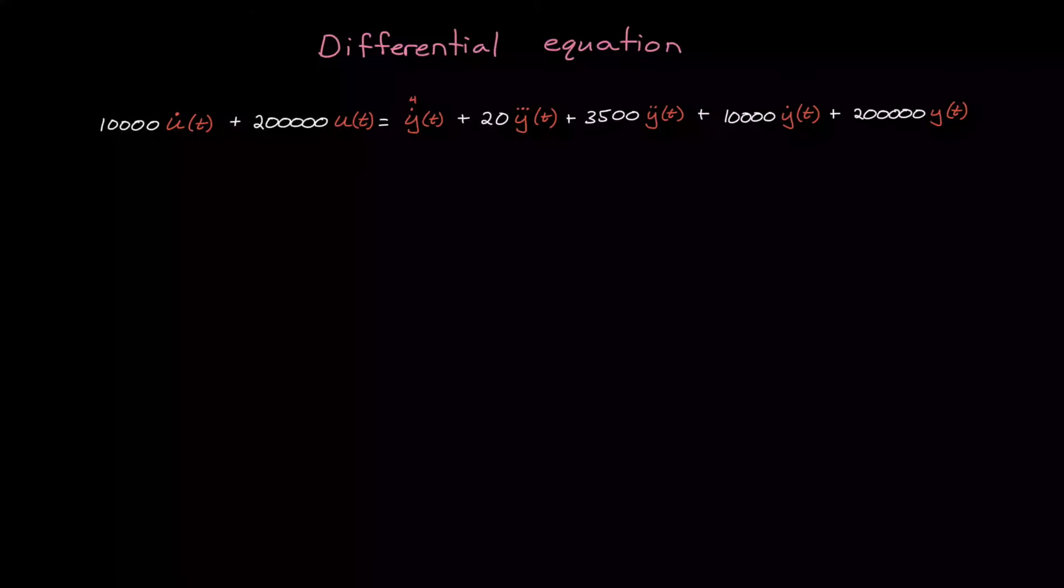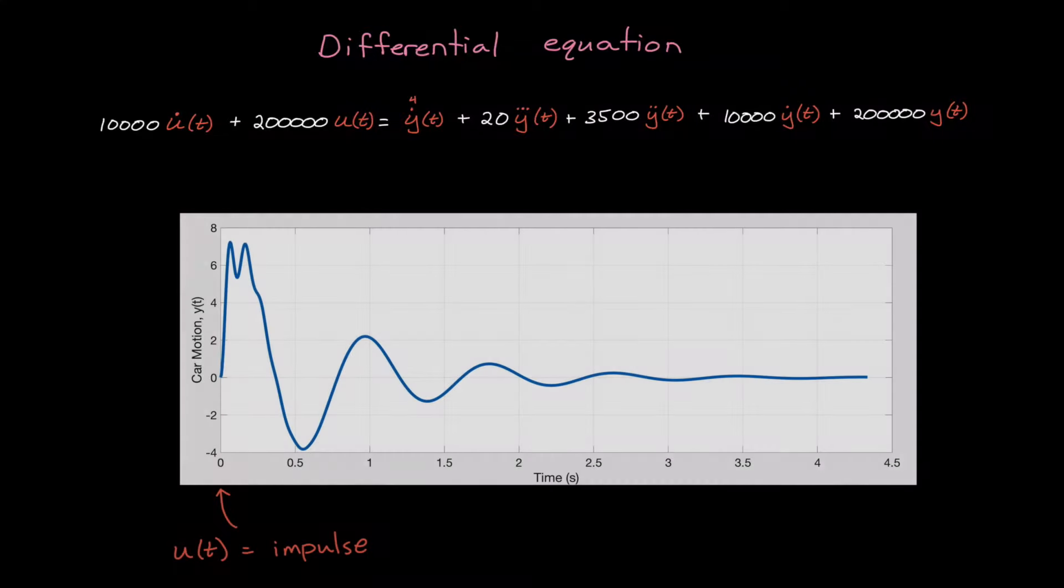In fact, this fourth order differential equation models the linear time-invariant dynamics for an arbitrary suspension system. And given an impulse input, this plot shows the solution of the differential equation, or the motion of the car over time.